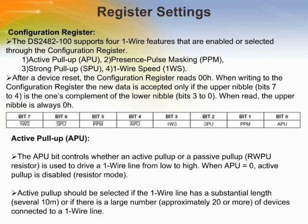The DS-2482-100 supports four One Wire features that are enabled or selected through the configuration register: one, active pull-up (APU); two, presence pulse masking (PPM); three, strong pull-up (SPU); and four, One Wire speed (1WS). After a device reset, the configuration register reads 00 hex. When writing to the configuration register, the new data is accepted only if the upper nibble is the one's complement of the lower nibble. When read, the upper nibble is always zero.